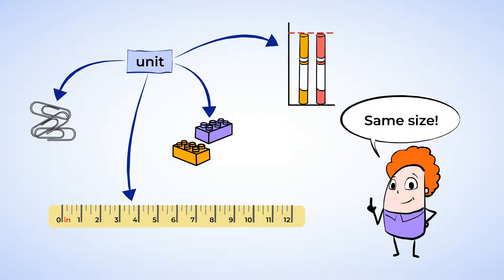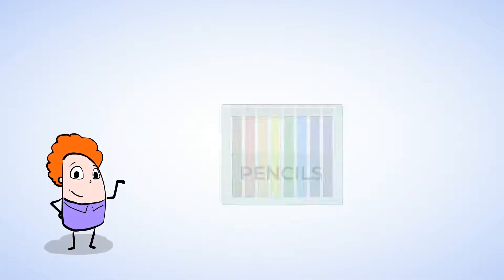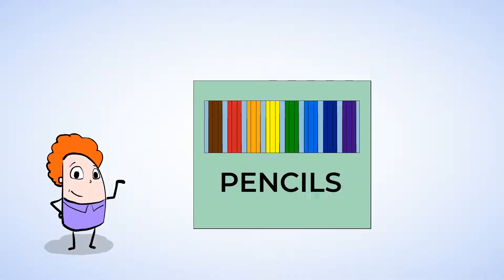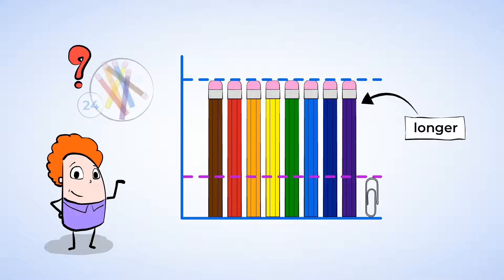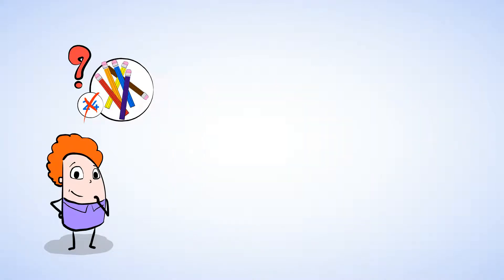And would you look at that? Eric is going to use unsharpened pencils from the box because this time they're all the same size. Now an unsharpened pencil is longer than a paper clip. So do you think that the desk will also be 24 pencils long? Well, probably not, because our units are much larger now. Well, how long do you think it'll be? Let's start measuring and find out.